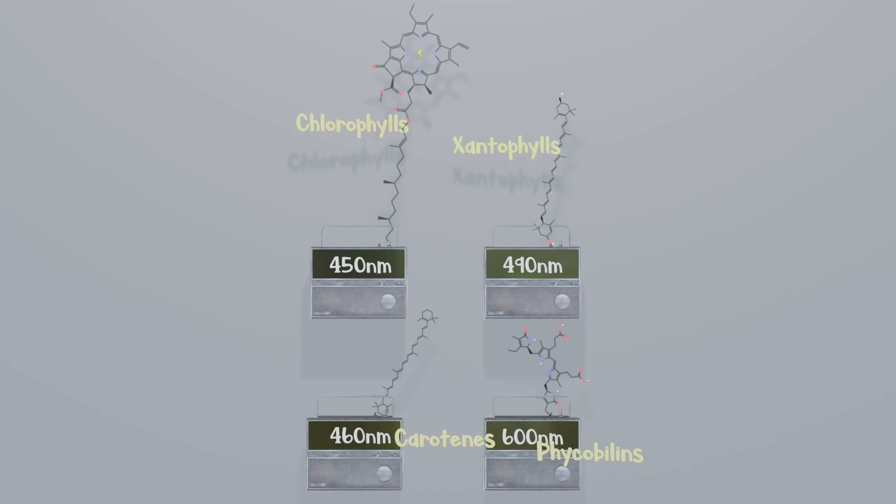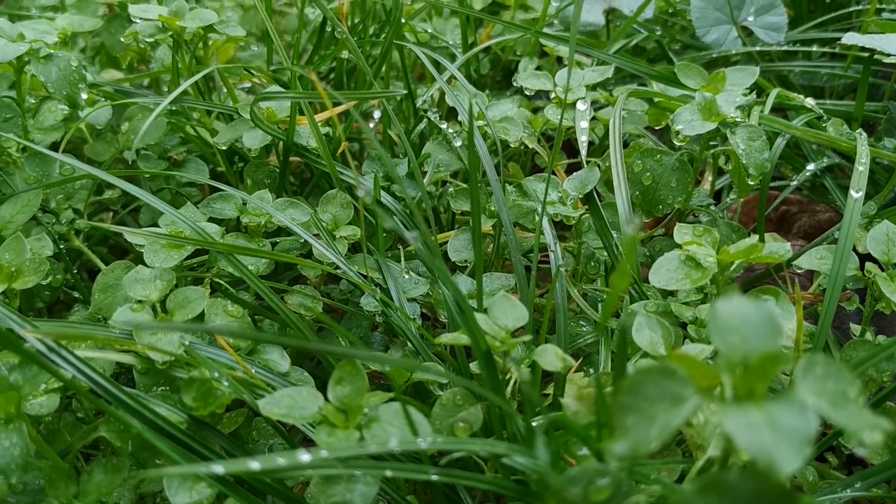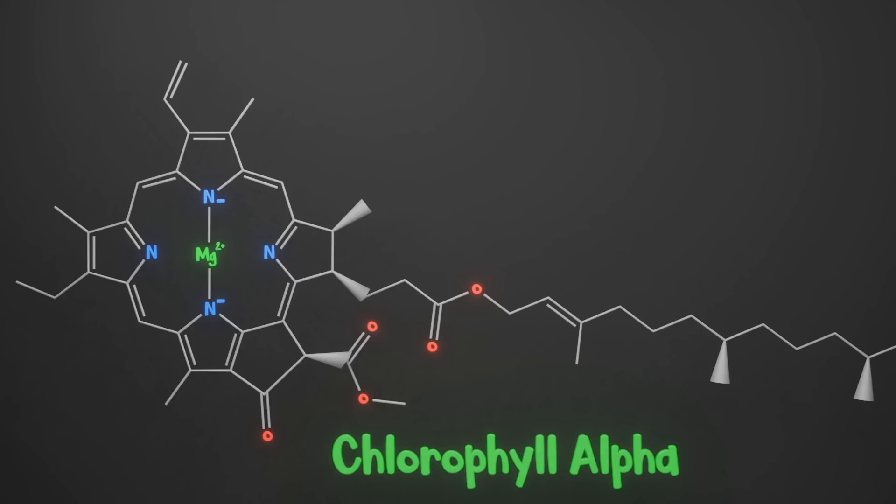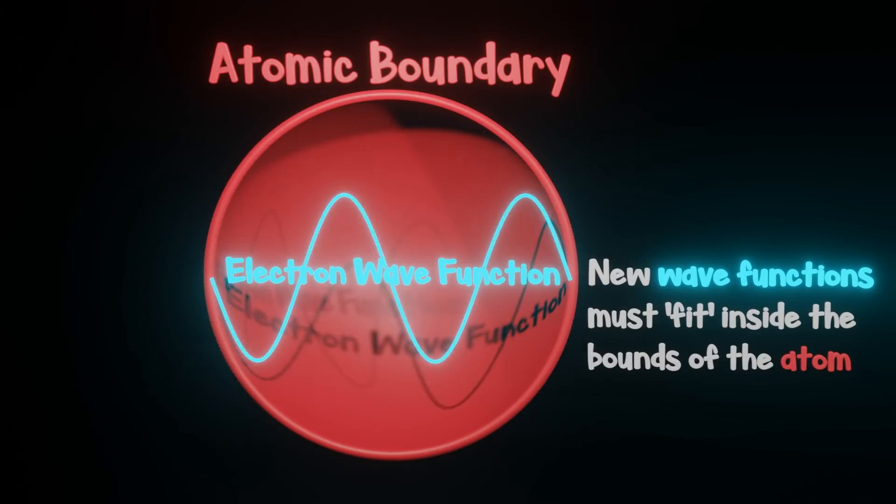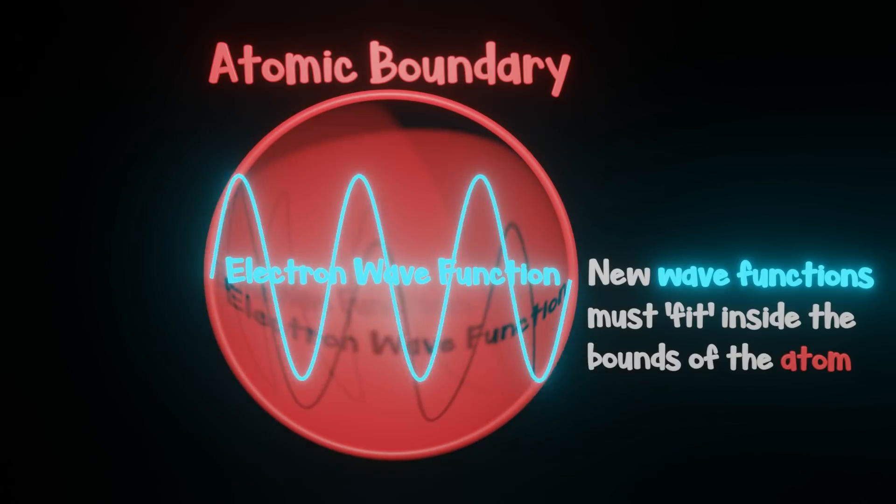The main pigment in all eukaryotic photosynthetic organisms is chlorophyll alpha. Normally, electrons can only absorb photons in very discrete amounts. They're constrained by the orbitals and energy states within the molecules they make up.